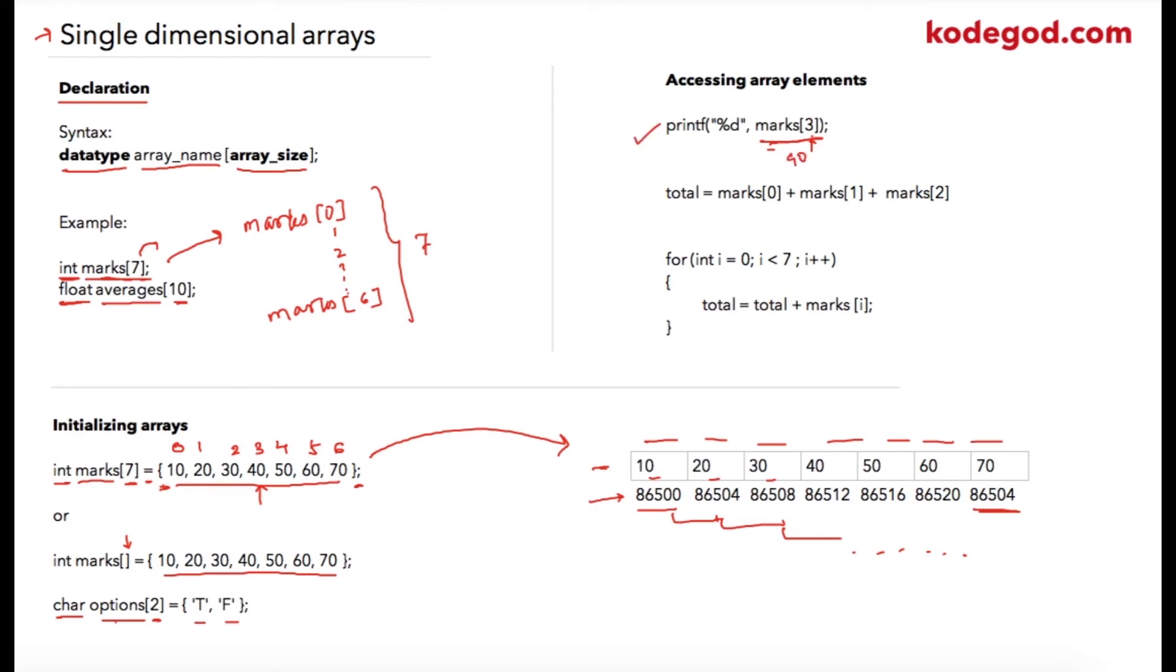Similarly, in this arithmetic statement, marks[0] is representing 10, marks[1] is representing 20, and marks[2] is representing 30. So 60, which is the result of this addition, will be stored into total.